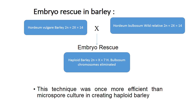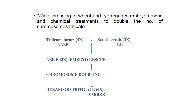When crossing wheat and rye, embryo rescue and chemical treatment are required to double the chromosome number of triticale. In Triticum durum (tetraploid wheat) crossed to rye (Secale cereale), the F1 will become 3x. Embryo rescue saves the F1, and the embryo chromosomes are doubled with colchicine treatment, giving hexaploid triticale with ABR genomic constitution.